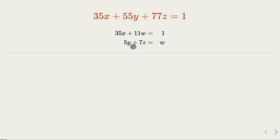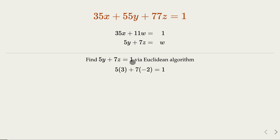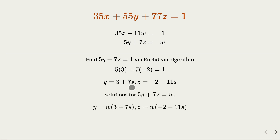Let's start with the second equation: 5y + 7z. Starting with w = 1, we find a particular solution using the Euclidean algorithm — skipping the steps, 3 and negative 2 is a particular solution. The general solution follows from our earlier result. Since we're looking for general w, we multiply by w to satisfy the equation, so y and z are expressed in terms of integer parameter s and w.